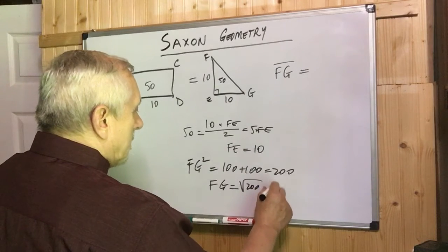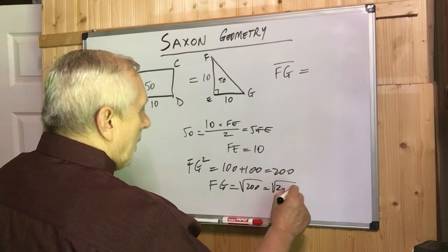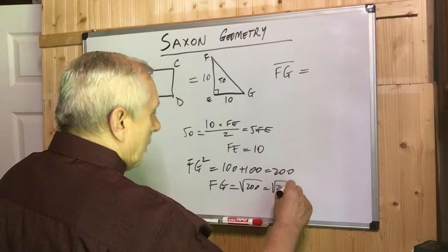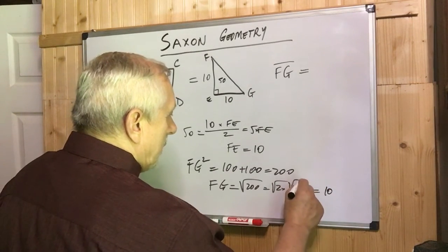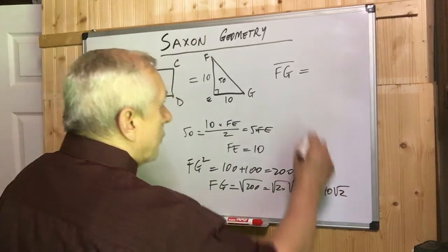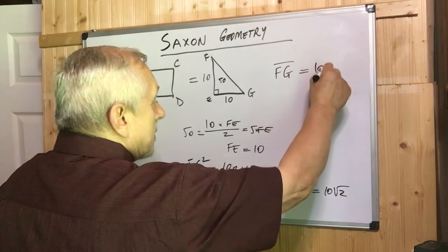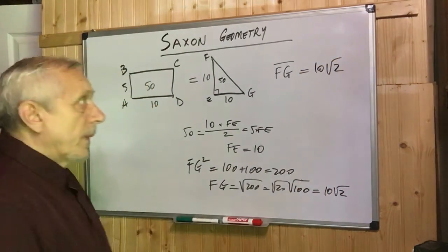We can write that as 2 times radical of 100. That means 10, radical of 100 is 10, times square root of 2, and that is the answer, 10 square root of 2. Thanks.